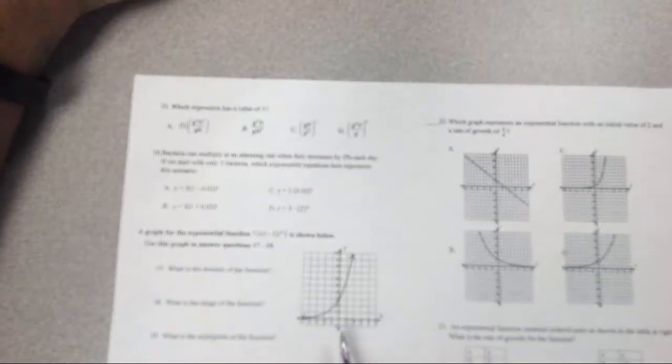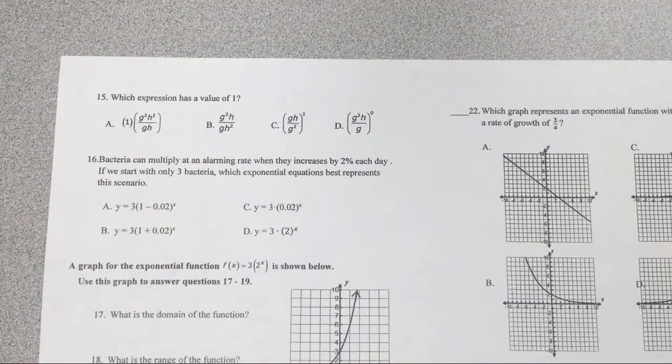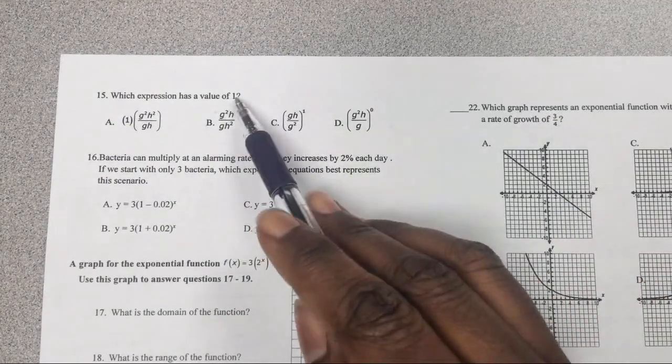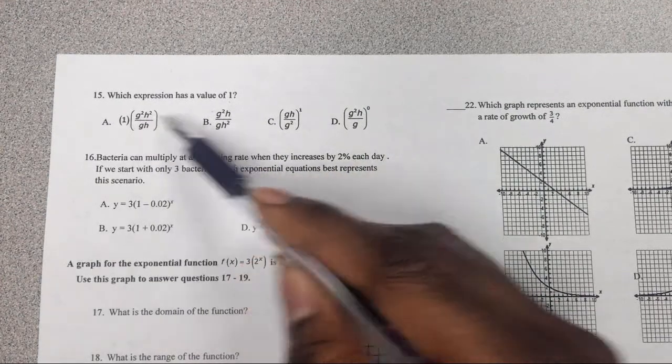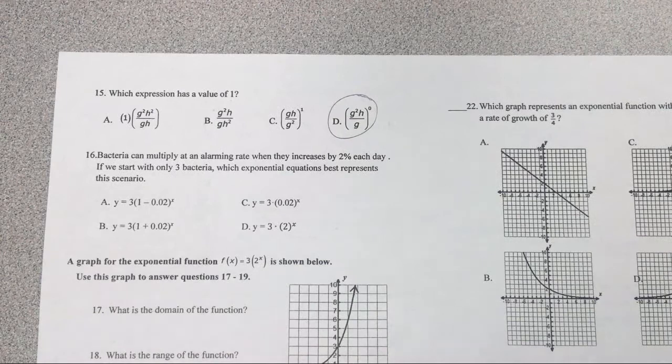Don't forget number 15. If you don't believe me, you can google it. Anything to the zero power always equals one, so we're looking for the whole quantity to be to a power of zero. Easy, just don't forget.